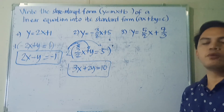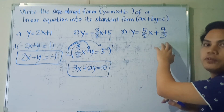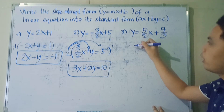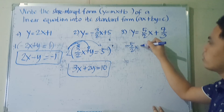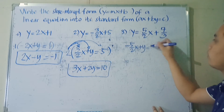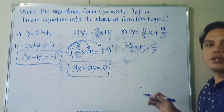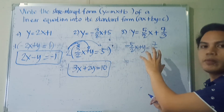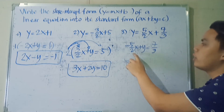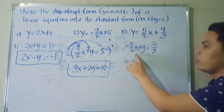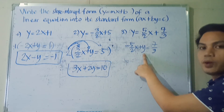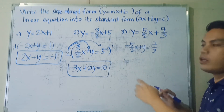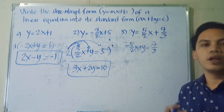For our last example, we have Y is equal to 5/2 X plus 7 over 3. Again, we move the term with variable X to the left side, giving us negative 5/2 X plus Y is equal to 7/3. Now, same as in number 2, we need to get rid of the fractional coefficients. Looking at the denominators of each term: we have 2 for the X term, 1 for Y, and 3 for the constant. The LCM of 2 and 3 is 6.